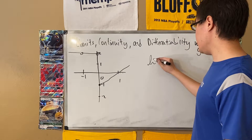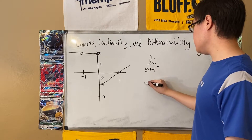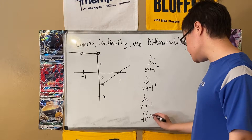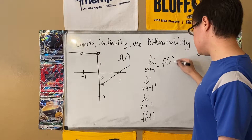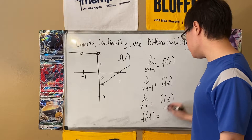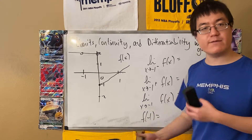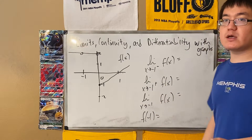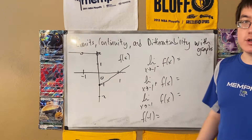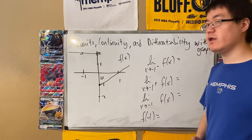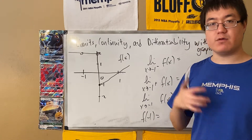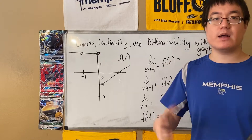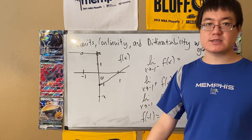For the point x = negative 1, we'll compute: the limit as x → −1 from the left, the limit as x → −1 from the right, the two-sided limit, and the function value f(−1). Remember that the superscript minus just means you're approaching negative 1 from the left. You look at y-values as x gets closer and closer — like x = −2, −1.5, −1.01, −1.0001 — and see if you're approaching a certain y-value.